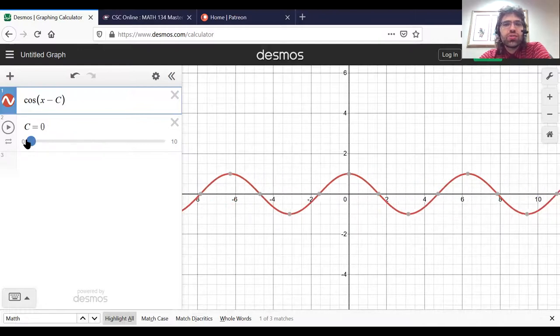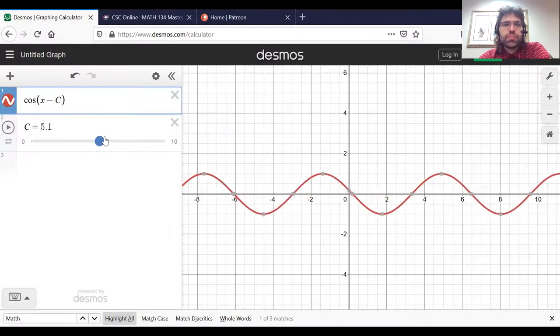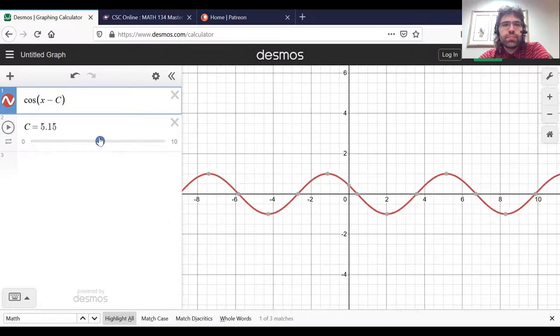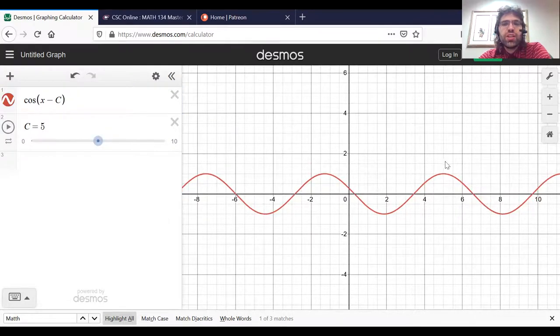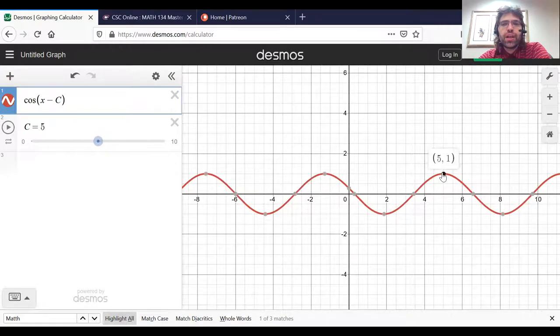So here's the initial curve. We're at zero one. We let c be five, and now we're at five one. We went from here five units to the right to here.